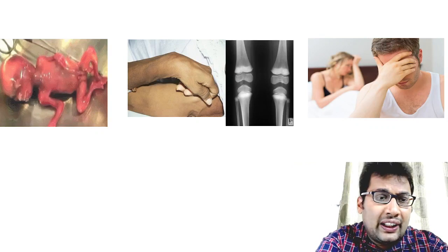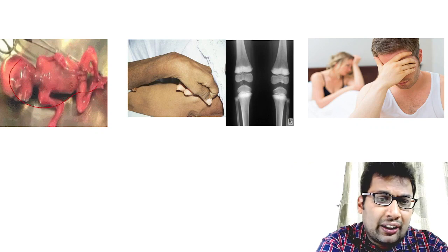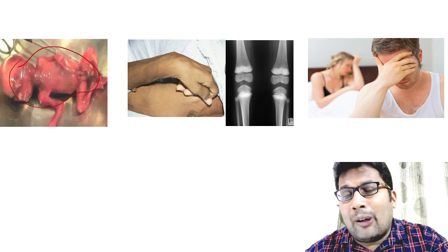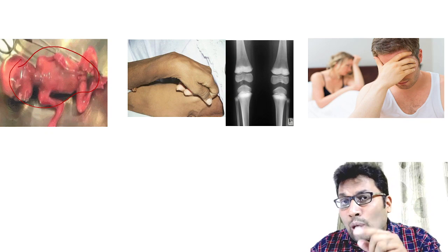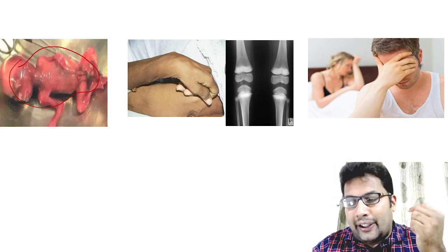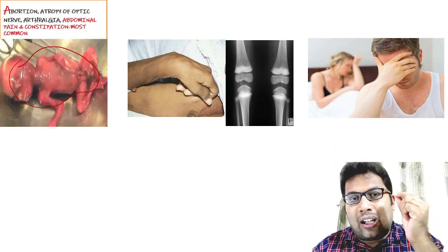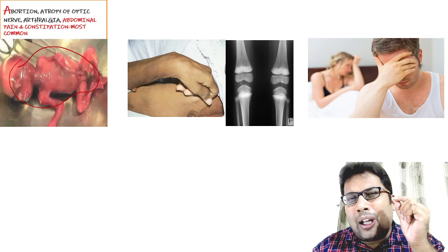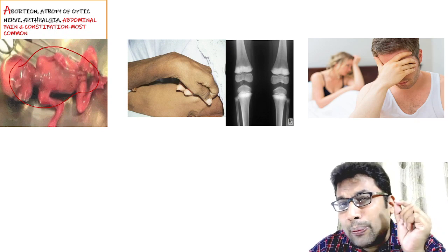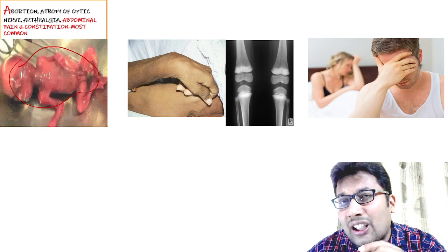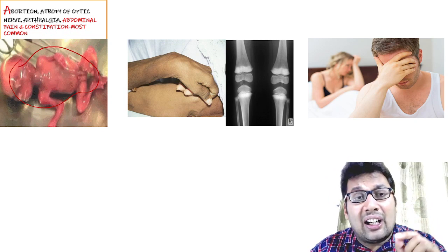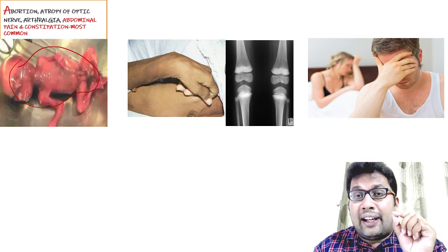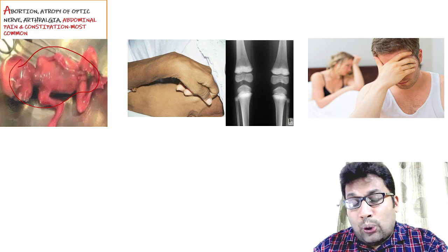Moving to BALI: A stands for abortion, caused by the compound lead oleate. Also included are atrophy of the optic nerve, arthralgia, abdominal pain, and constipation. The most common clinical feature is constipation — not diarrhea — along with abdominal colicky pain.